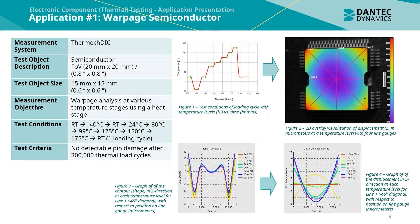Application 1 was a warpage measurement of a semiconductor. The measurement system used was a thermic DIC system. The semiconductor had a test object size of 15mm by 15mm and the field of view was 20mm by 20mm. The measurement objective was to perform a warpage analysis at various temperature stages using a heat stage, with the test criteria being no detectable pin damage after 300,000 thermal load cycles.